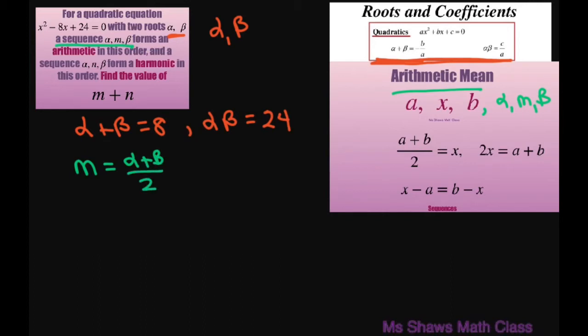For the harmonic mean, we have alpha, n, beta. But you do the reciprocal. So we're going to write 2 divided by n equals 1 divided by alpha plus 1 divided by beta. I'm using the harmonic mean formula - you do the same thing, but keep that 2 in the numerator.